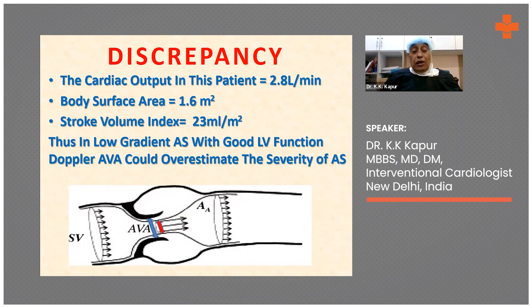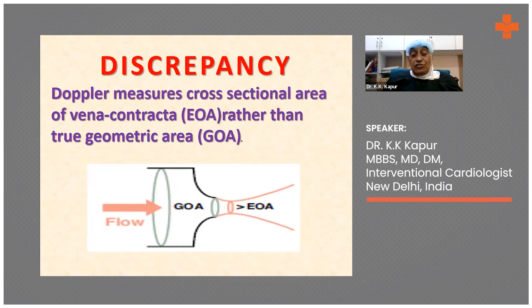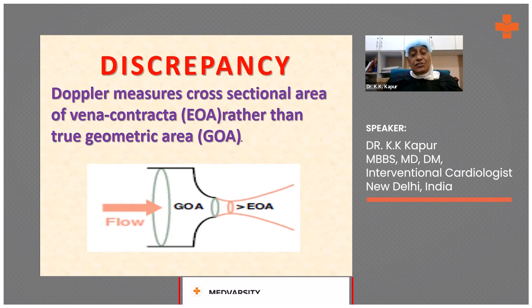The Doppler aortic valve area overestimated the severity of AS. That is because Doppler calculates the aortic valve area at the level of the vena contracta, while planimetry gives the anatomical aortic valve area, which is somewhat larger. The Doppler measures the cross-sectional area — the EOA, that is effective aortic orifice area — rather than the true geometric orifice area. That is the reason sometimes for the discrepancy between the calculated aortic valve area by Doppler versus the one planimetered by either 2D or 3D.